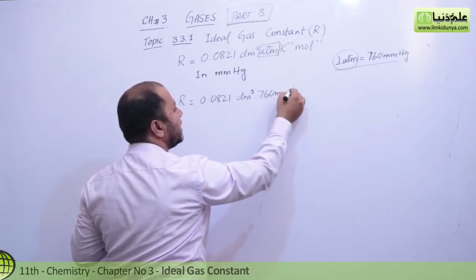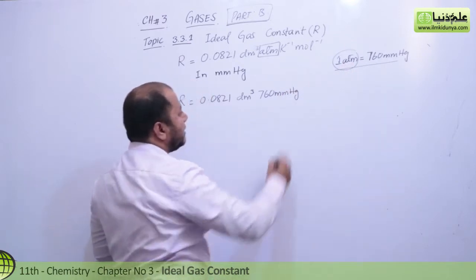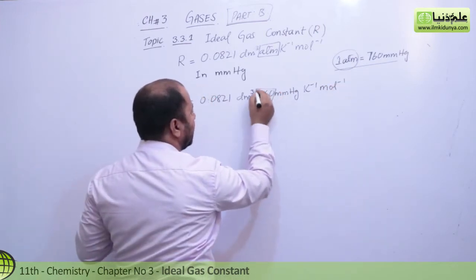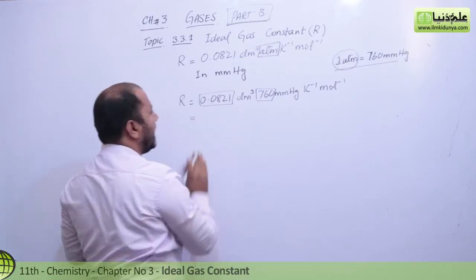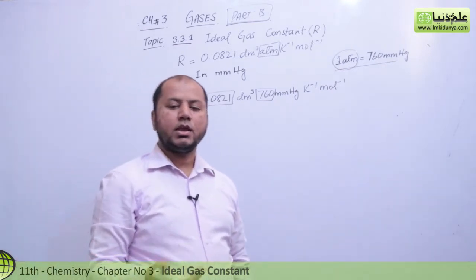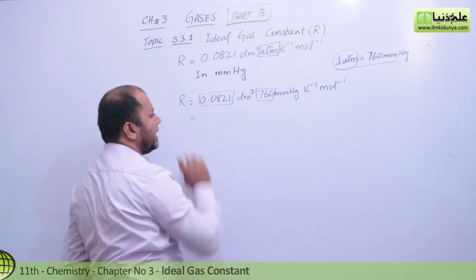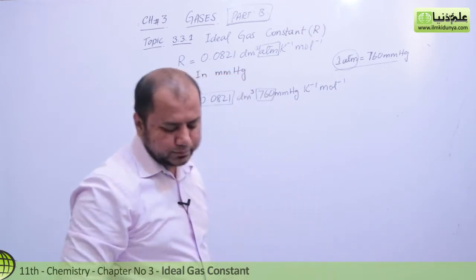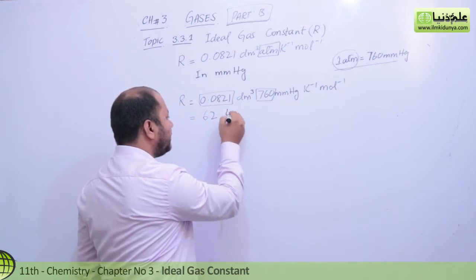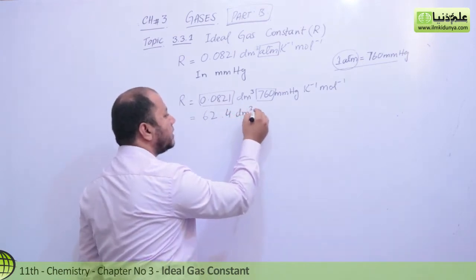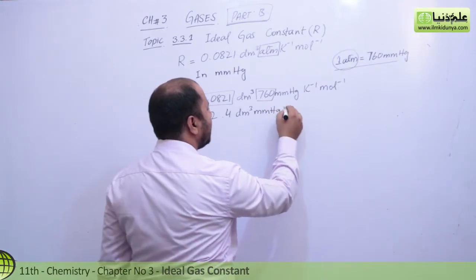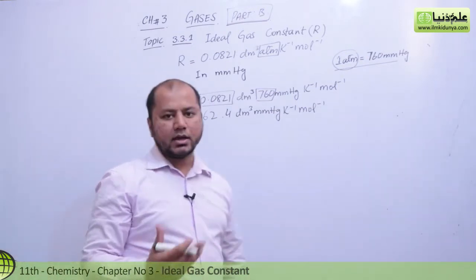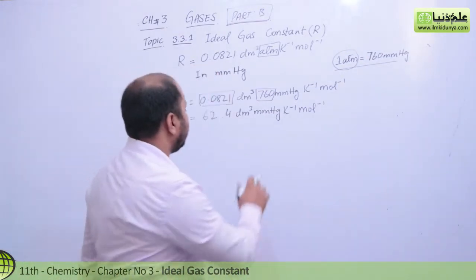760 mm of Hg, because 1 atm equals 760 — per kelvin per mole. When you multiply this value by this value, the unit you have will change. The ATM unit converts into millimeter of Hg, giving you mm of Hg·dm³ per kelvin per mole.